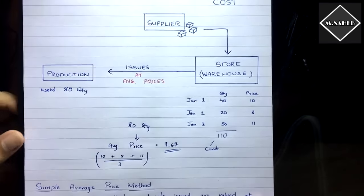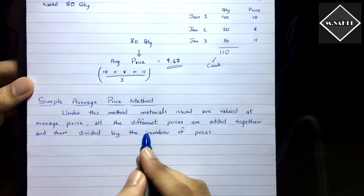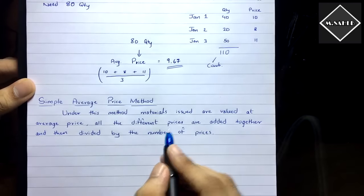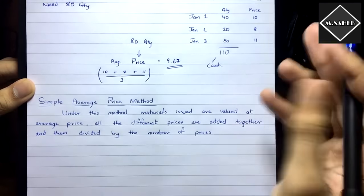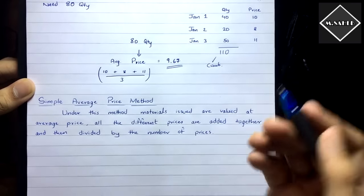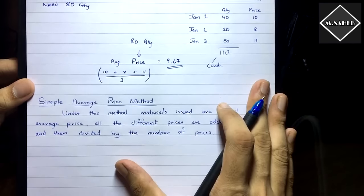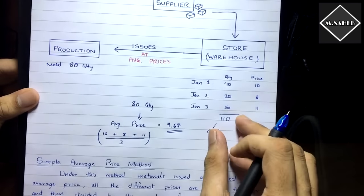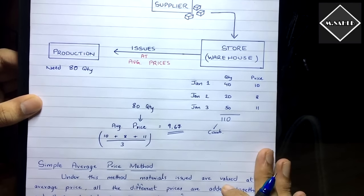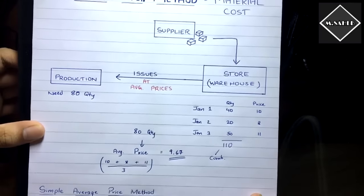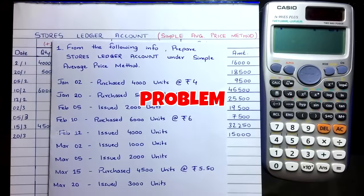Under this method, materials issued are valued at the average price of all the different prices in the combination. How many lots are there? Three lots — so three prices. Add them together and divide by the number of prices. It's not like FIFO or LIFO where you follow a sequence — here you just take the whole combination and average the prices. It's very simple. Now let's solve a problem and you will understand this better.